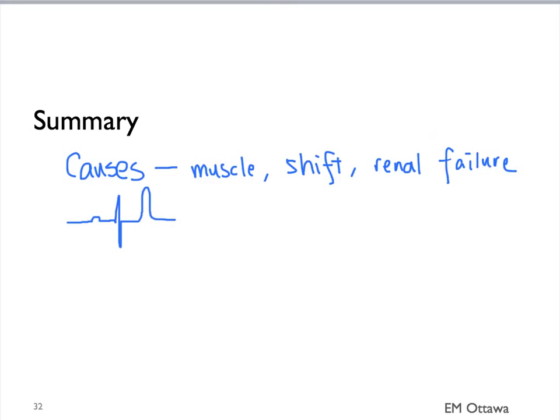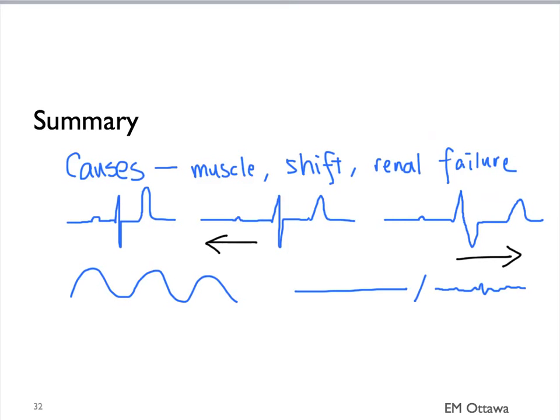In summary, we discussed the causes for hyperkalemia, whether there is muscle injury, a shift from the cells, or if the kidneys are not working. We talked about the ECG changes in patients, starting from a peaked T wave to a prolonged PR interval and the disappearing of the P wave, a prolonged QRS, a sine wave, and to asystole or VF arrest. We discussed the management including stabilizing the membrane, shifting potassium into the cells, and eliminating it from the body.